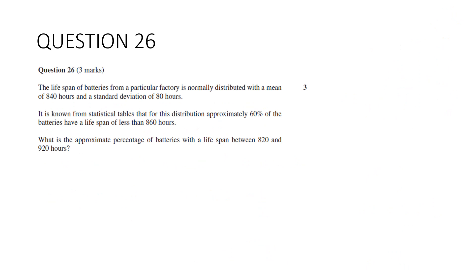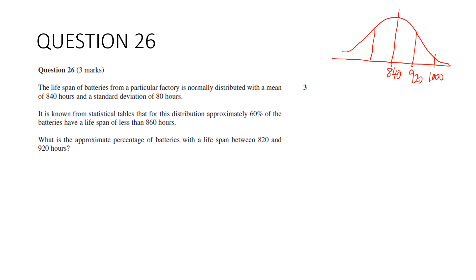Question 26. The lifespan of batteries from a particular factory is normally distributed with mean 840 hours and standard deviation of 80. It is known from statistical tables that approximately 60% of the batteries have a lifespan less than 860. What is the approximate percentage of batteries with a lifespan between 820 and 920?